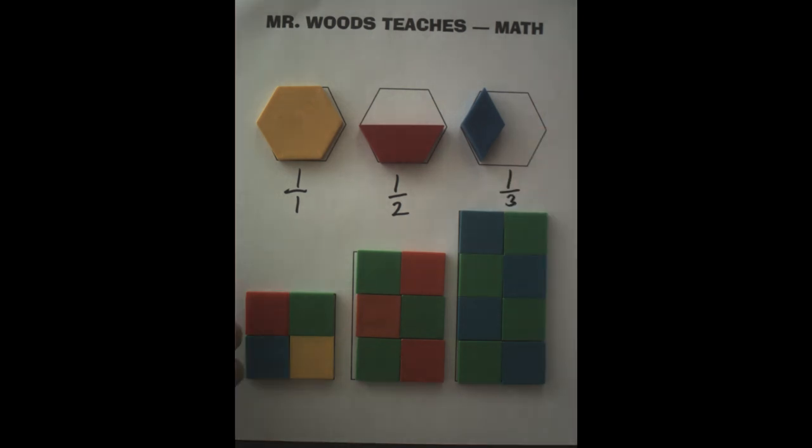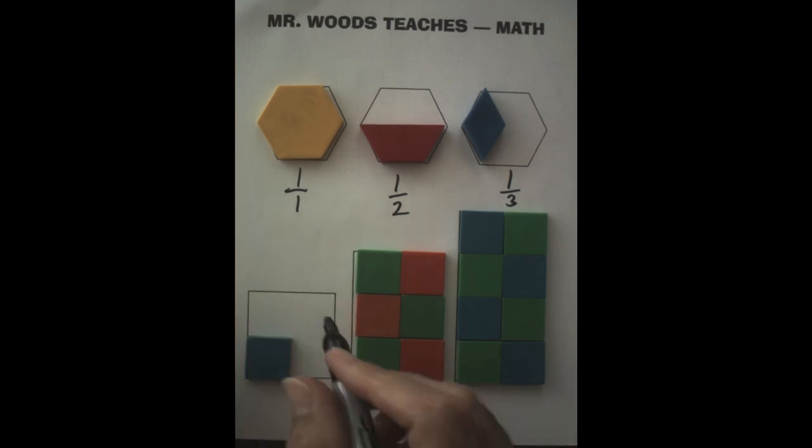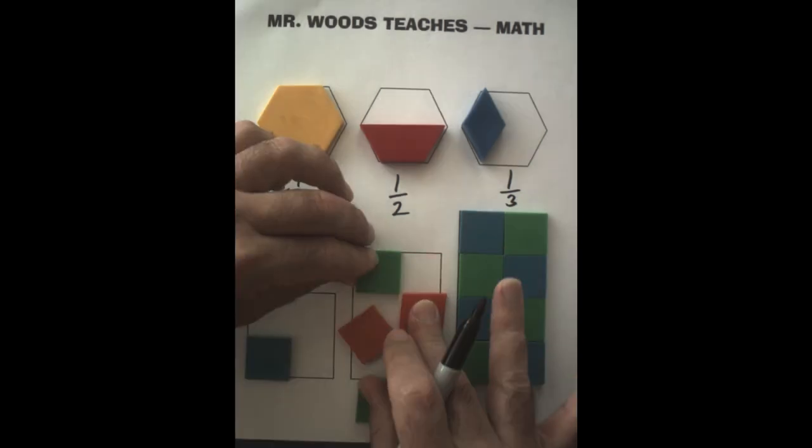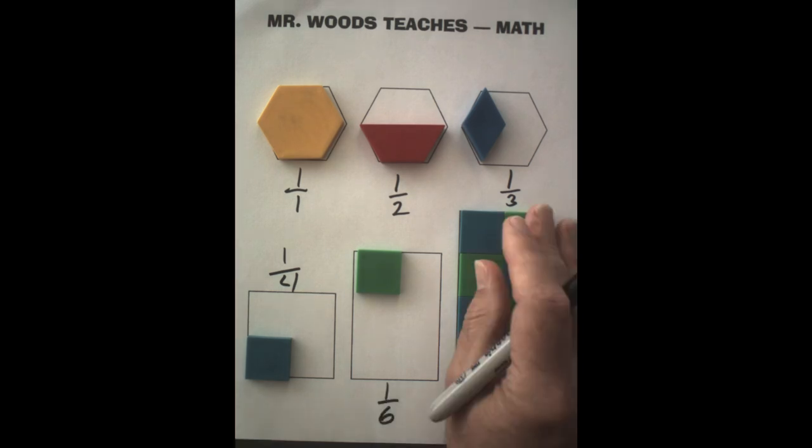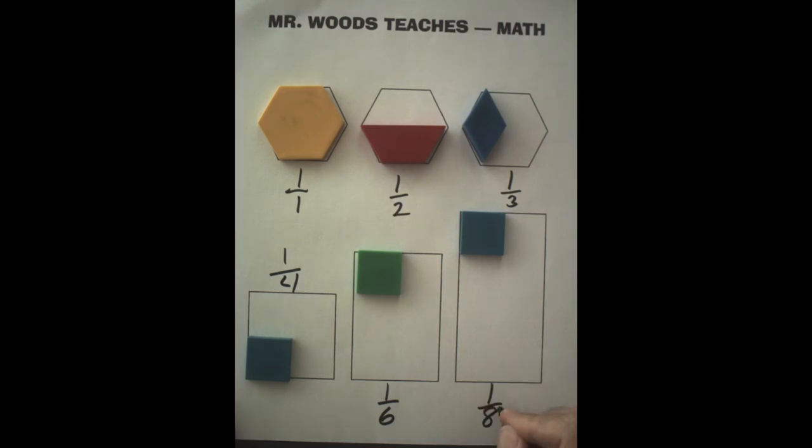Four pieces, I take three away, I have one fourth. Six pieces, I take them all away except for one, I have one sixth left. Eight pieces, take it all away, I have one eighth left.